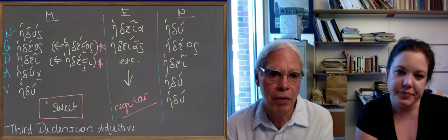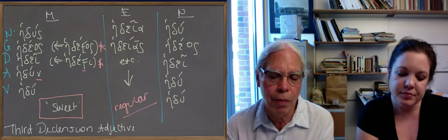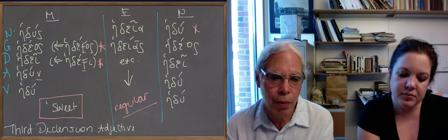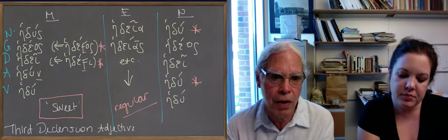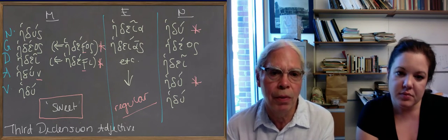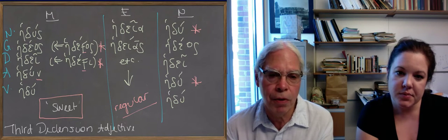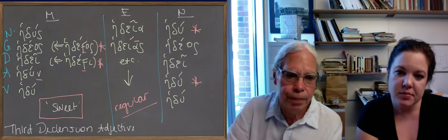The neuter is like the masculine. It's a third declension form, so there's no ending for the nominative and accusative singular, just hedu as well as the vocative is hedu, but the genitive and the dative are the same as for the masculine forms.